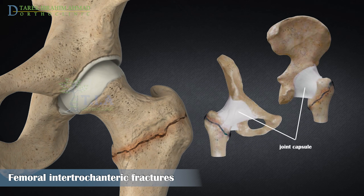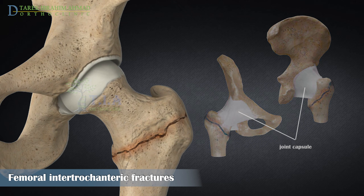They are extracapsular. The intertrochanteric region contains a large amount of cancellous bone with a good blood supply, and thus is at lower risk for complications related to interruption of the blood supply and typically heals well if reduction and fixation are properly performed.